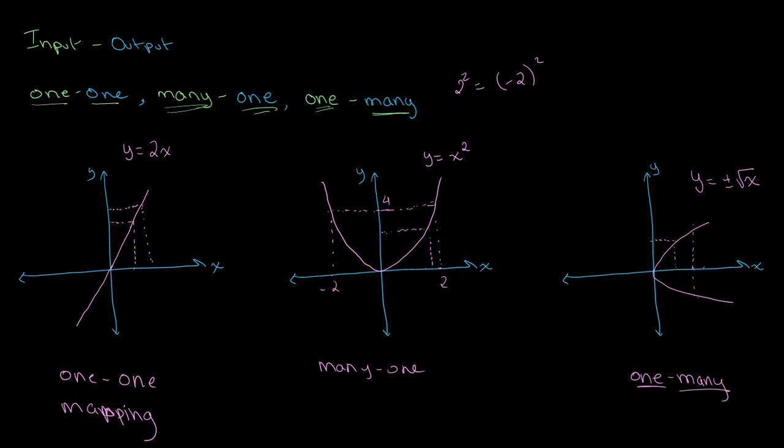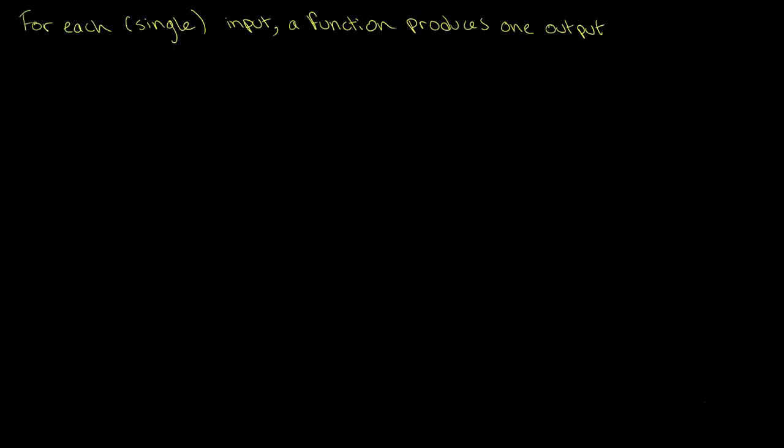Another important concept within mapping is understanding what types of mapping can be used to describe functions. Let's revisit the definition of a function: a function is a rule or expression that for each single input it produces only one output. That is, when you input a single value into the function you should receive only one value. Let's look back at our graphs to determine which types of mapping can be used to describe functions.